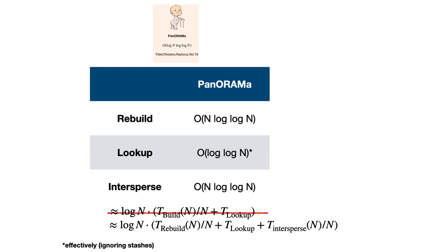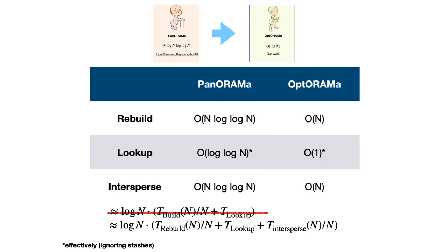In order to get an optimal construction, we have to improve each one of those operations. In Optorama, this is exactly what we did. We showed how to improve rebuild to linear time, how to improve the lookup to be constant time, and interspersing to be O(n) as well. Only if we do all of those can we actually get an optimal construction.